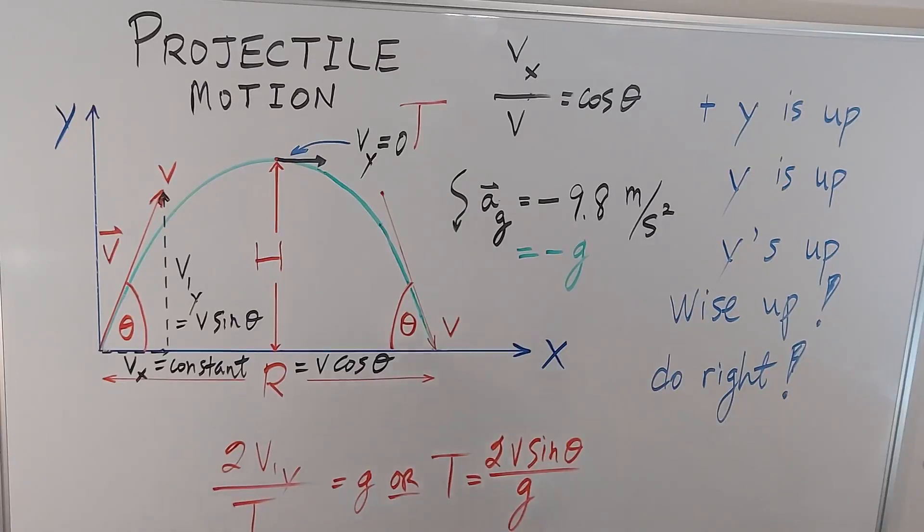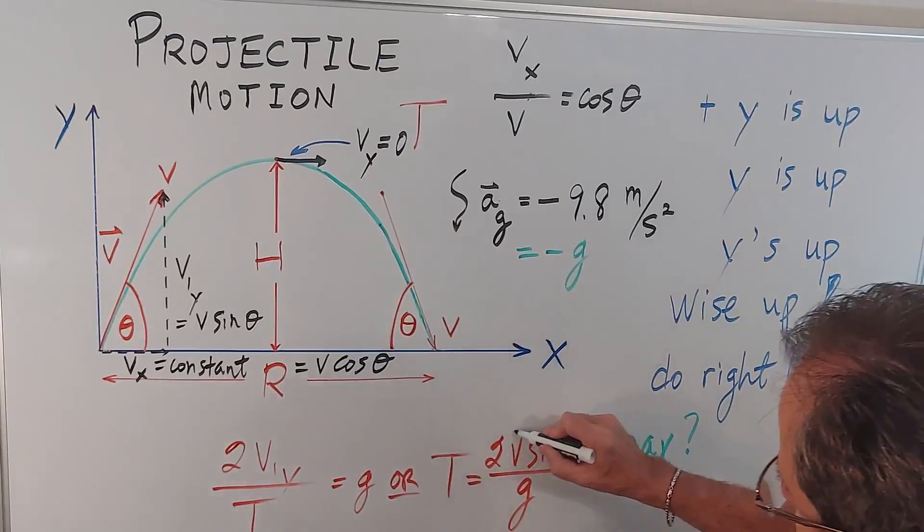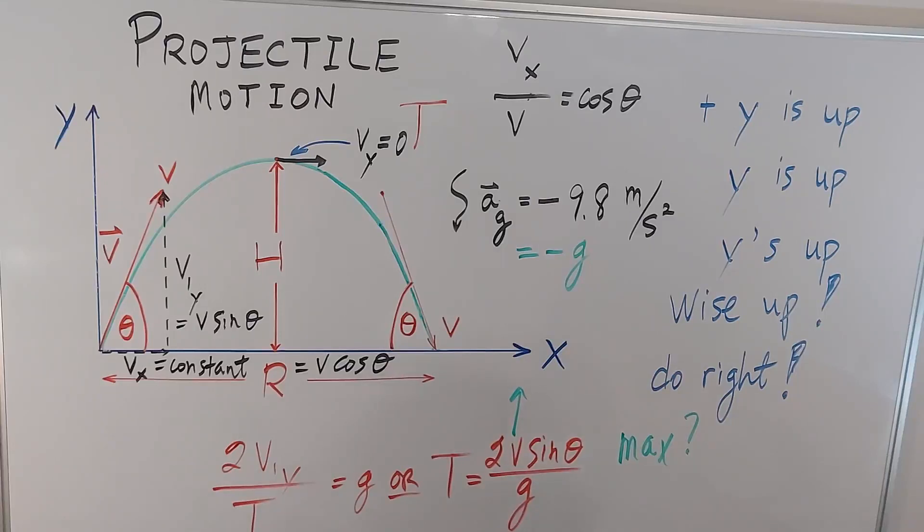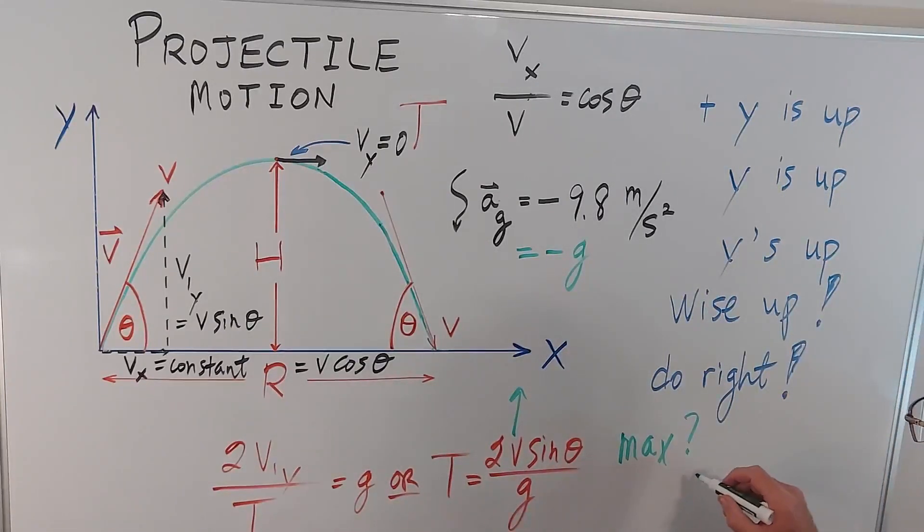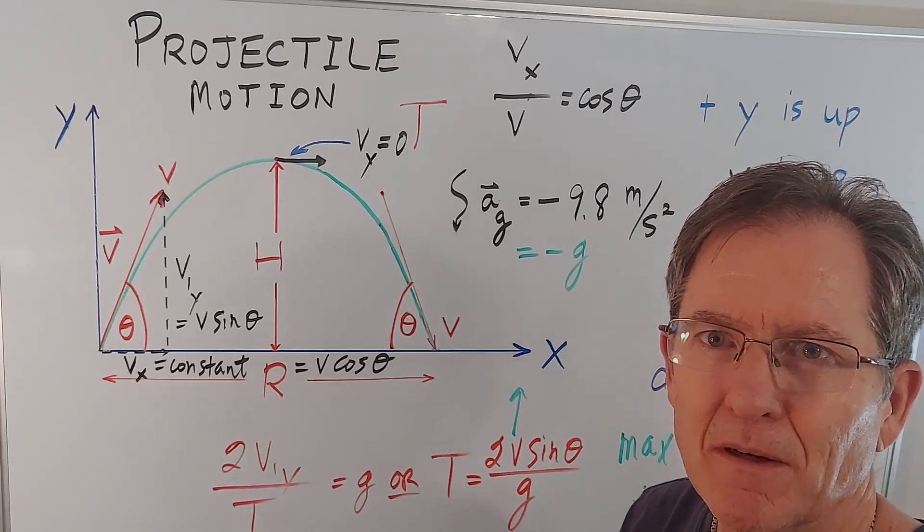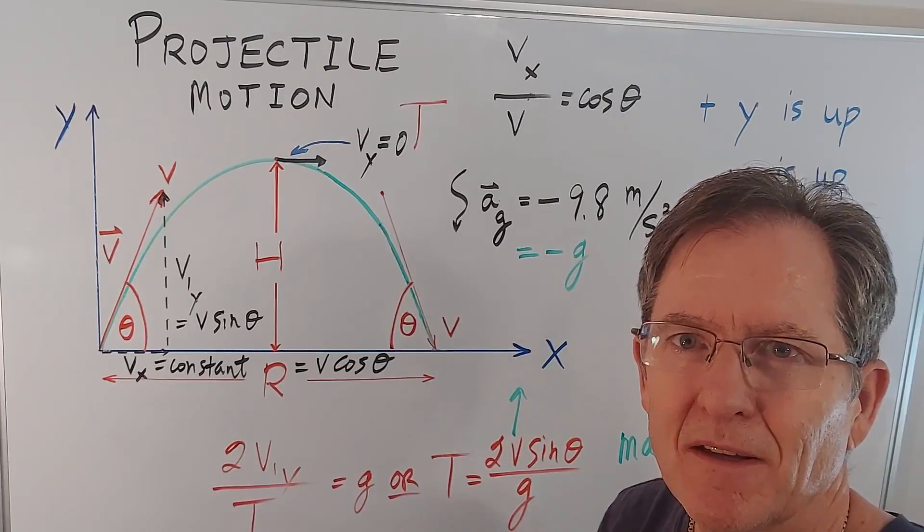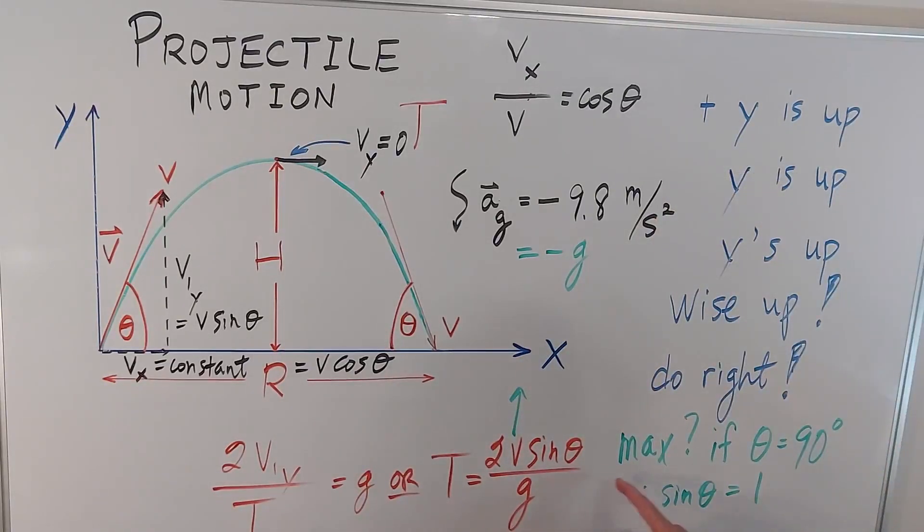Now you might wonder, when is the time a maximum? Well, of course, if you increase the speed, it will go higher. So that's kind of obvious. But in terms of the angle, at what angle will the time in the air be a maximum? Well, it's if theta is 90 degrees. Because, therefore, sin theta is its maximum value of 1. So if you want something to go as high as possible, you've got to shoot it straight up in the air. Not particularly helpful for baseballs or golf balls. But if, let's say on Independence Day, we were talking about that last time, you want to celebrate with fireworks, you probably want to shoot them straight up in the air. So the formula tells you what the maximum should be.